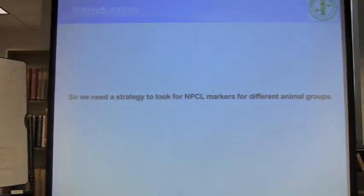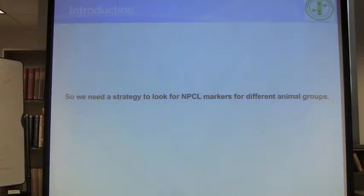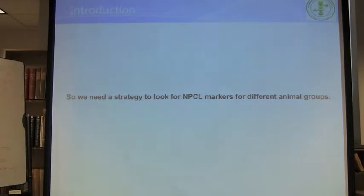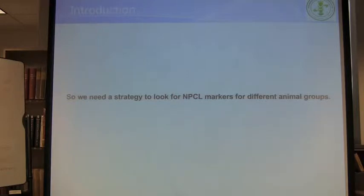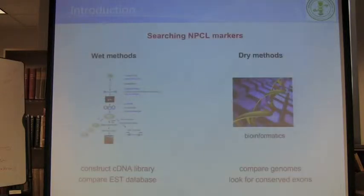We need a strategy to look for NPCR markers for different animal groups. If we have this strategy, we can design many markers for specific animal groups — that is our goal. Actually there are two types of strategy: the wet method and the dry method.